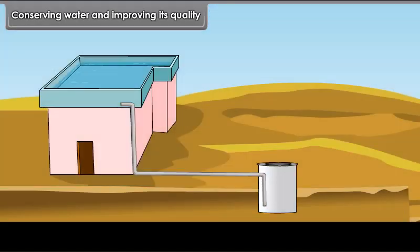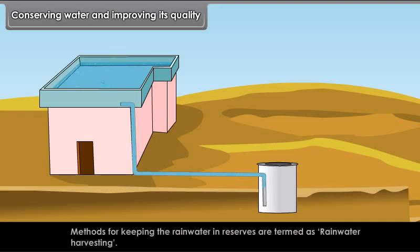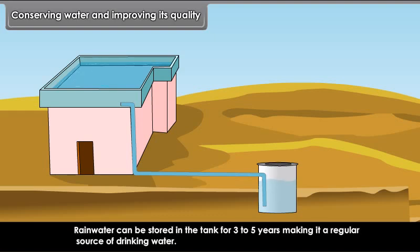Rainwater Harvesting. Methods for keeping rainwater in reserves are termed as rainwater harvesting. Do you know rainwater can be stored in tanks for 3 to 5 years, making it a regular source of drinking water?